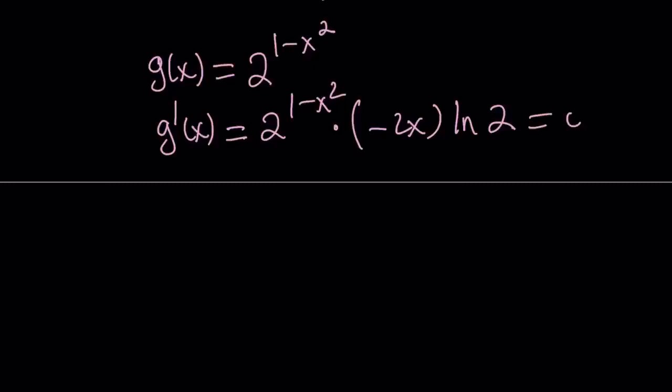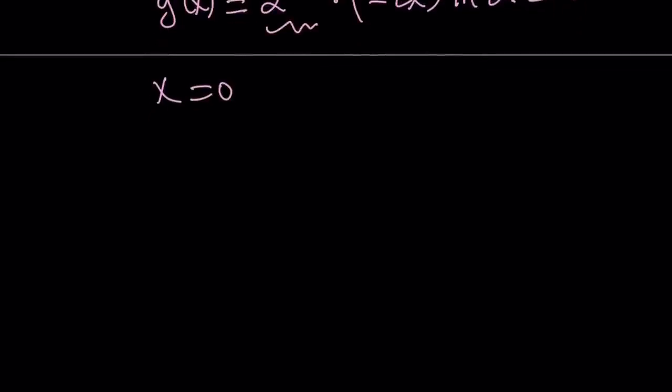Set this equal to 0 again. This one is actually easier because the exponential can't be 0. X must be 0. So, x equals 0 is our critical point. So, we should either have a max or a min at that point. But let's go ahead and check the table. X, this is g prime, and this is g, and we have a 0.